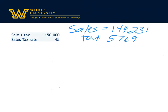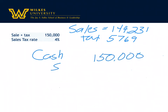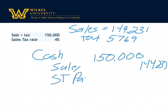The journal entry to record this is going to be a debit to cash for $150,000, a credit to sales for $144,231, and a credit to sales tax payable for $5,769.